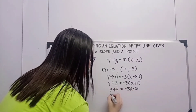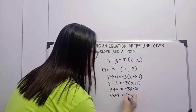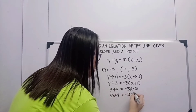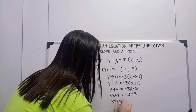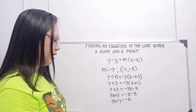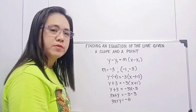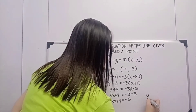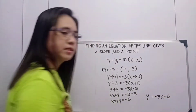We transpose: negative 3x will become 3x, so 3x plus y is equal to negative 3. Then negative 3 and positive 3 will become negative 6. So this will become 3x plus y is equal to negative 6. That is our standard form. The slope-intercept form will be y is equal to negative 3x minus 6.